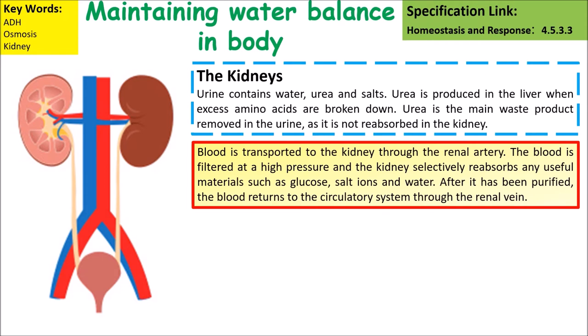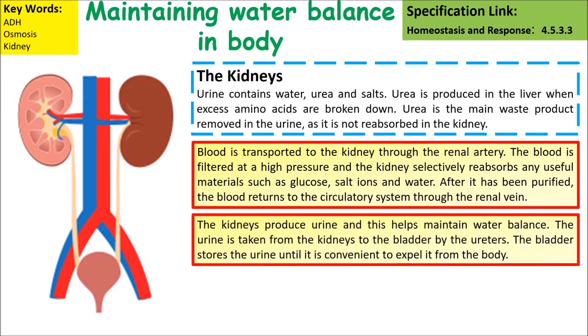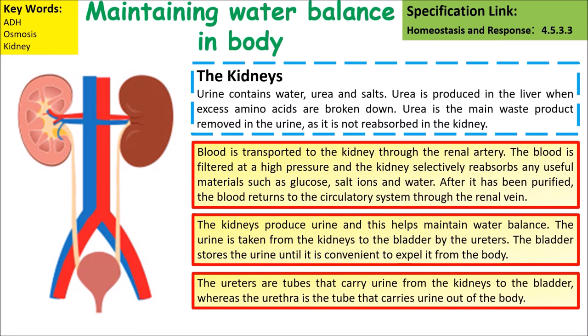Blood is transported to the kidneys through the renal artery and filtered at high pressure. The kidney selectively reabsorbs useful materials such as glucose, salt ions, and water. After purification, the blood returns to the circulatory system through the renal vein. The kidneys produce urine to help maintain water balance. Urine is taken from the kidneys to the bladder by the ureters, while the urethra carries urine out of the body — it is worth knowing the difference between them.